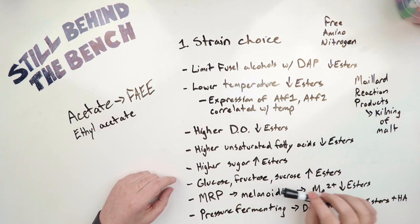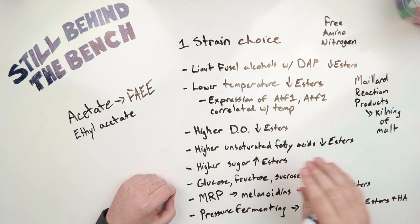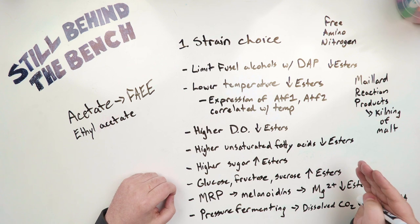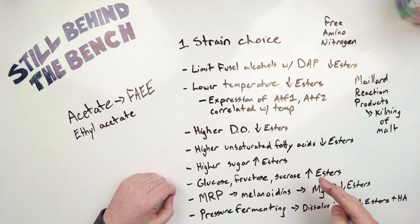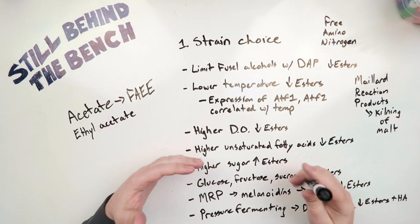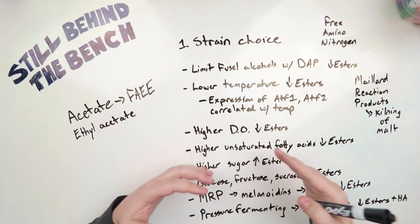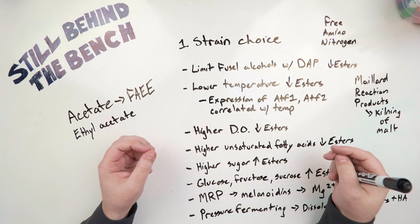And specifically, glucose, fructose, and sucrose, in comparison to maltose, seem to increase the quantity of the esters produced as well. Maltose does not seem to increase those quantities, which is another possible reason for the idea that maltose, essentially sugars from malted grains, are healthier for yeast.